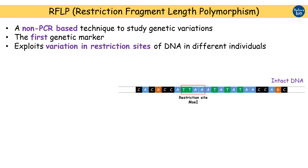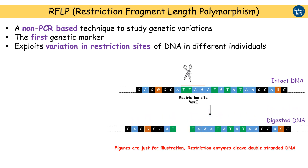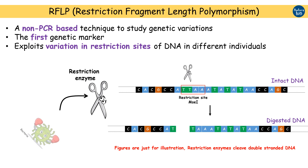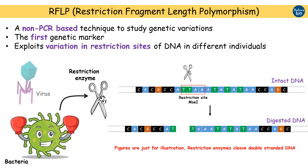Restriction sites are 4 to 6 base pair sequences which are recognized and cleaved by specific restriction enzymes. Restriction enzymes, which are the basis of RFLP, are derived from a bacterial defense system that cleaves DNA of invading viruses, thus protecting the bacteria. These restriction enzymes act as a tool to study DNA variations, which is essential to know the similarities and differences between individuals or samples.